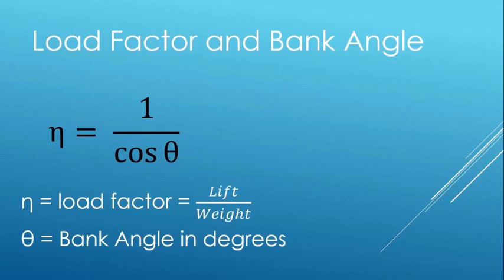The other formulas used are load factor, which is equal to lift over weight. Load factor from bank angle can be found with the formula 1 over the cosine of the bank angle, which gives you the load factor per bank independent of airplane type. Speed doesn't matter. A specific bank angle will give you a specific load factor.